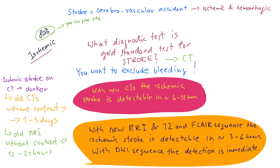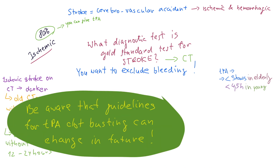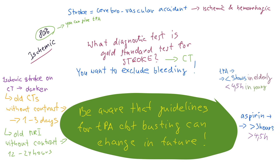That's the trick. You want to know if it's hemorrhagic. If you see bleeding, no TPA — you could kill the patient — and in some cases you go to surgery. To go deeper: you give TPA if it's ischemic, confirmed by CT because you don't see bleeding. And it must be within three hours after stroke onset — only about 15% of patients come that early. If it's more than three hours, you give aspirin.